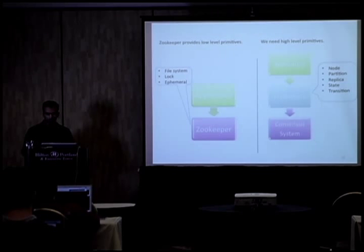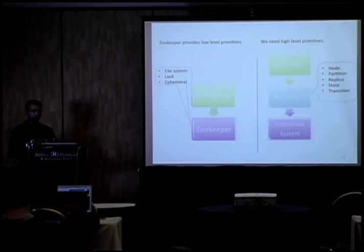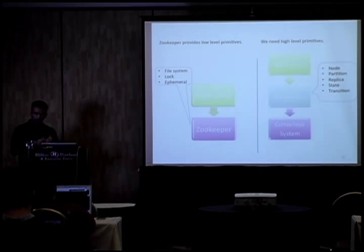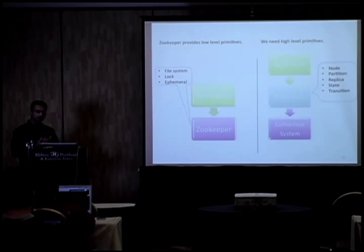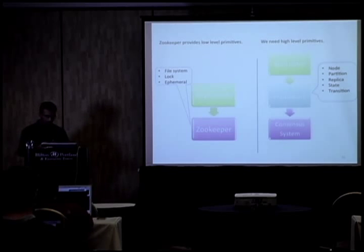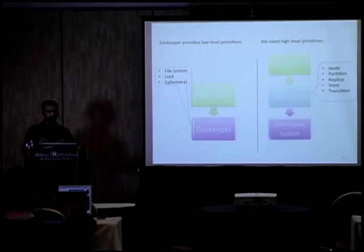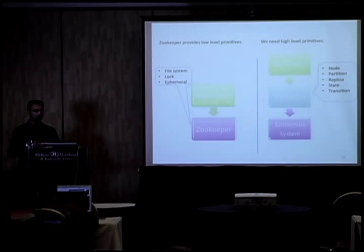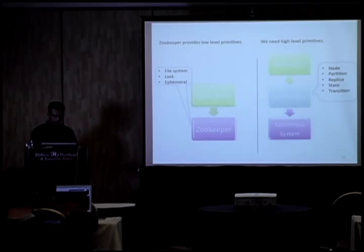What a distributed system actually needs is a high-level primitive where you can define what behavior you want. The building blocks needed are: node, partition, replica, state, and transition. You need to specify how to partition the system, what the replication factor is, what the different roles of replicas are (master or slave), and what should happen when a node fails or a new node is added. All of this is super complicated and not trivial to implement.